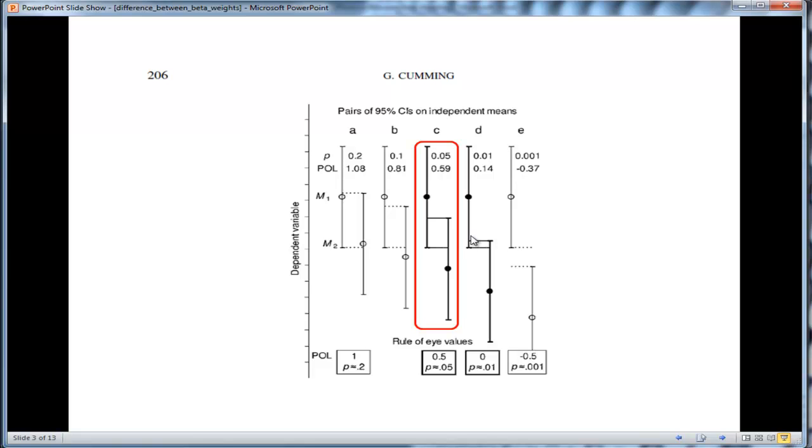And if you look at that amount of overlap between the confidence intervals, it indicates a statistically significant effect, P equal 0.05. Now, in the case where there's just barely a bit of overlap equal to 14%, that equals a statistically significant effect equal to 0.01.